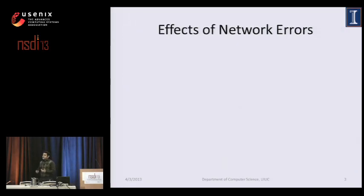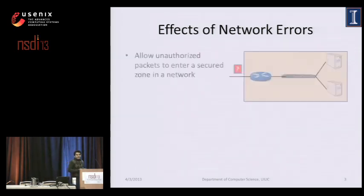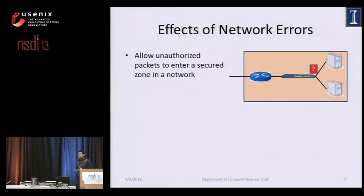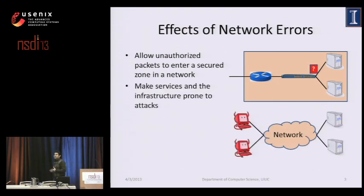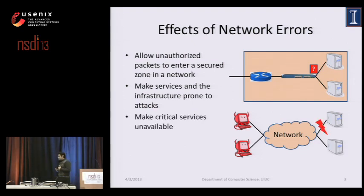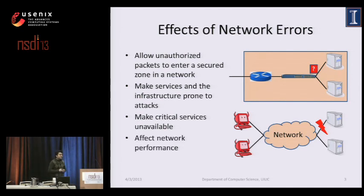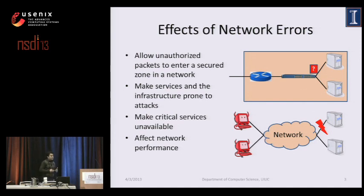These misconfigurations and bugs affect network operations in different ways. They can allow unauthorized packets to enter a secure zone and make services and infrastructures prone to attacks, such as DOS attacks or injection of malware. These errors also make critical services unavailable, affecting network performance and resulting in customer dissatisfaction and reduction in revenue. That is why network operators usually deploy some form of traffic monitoring and network debugging techniques to keep their network free from errors.